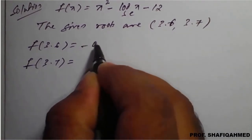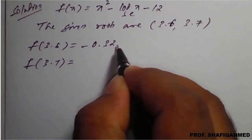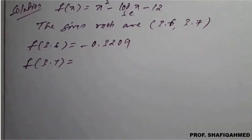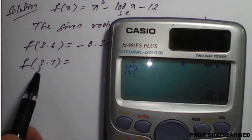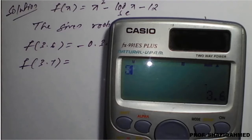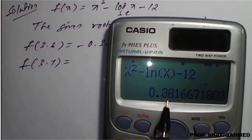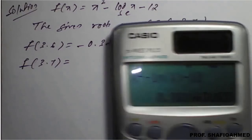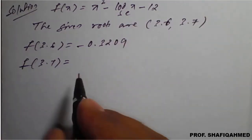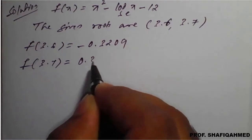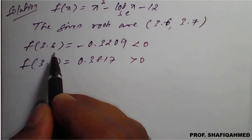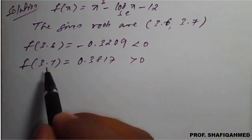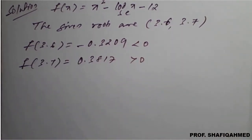So f(3.6) = -0.3209. Similarly, for x = 3.7, the result is 0.3817 — which is positive. So this is the negative value and this is the positive value. Both values are already given in the question, so we use these values to work out the solution.